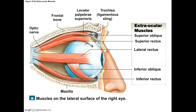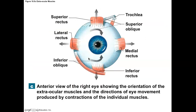We cannot see the medial rectus on the first diagram because it's obscured by the eye itself. But on the next diagram, we can see the superior rectus, lateral rectus, medial rectus, and inferior rectus — all straight muscles. They move the eye in the direction of their name, so that's pretty easy. Superior rectus rolls the eye superiorly, medial rectus rolls the eye medially, and so on.